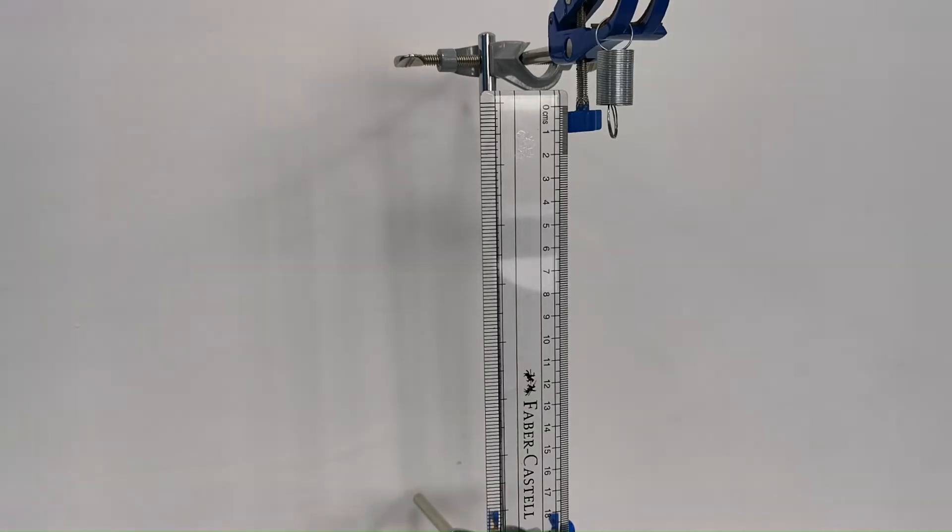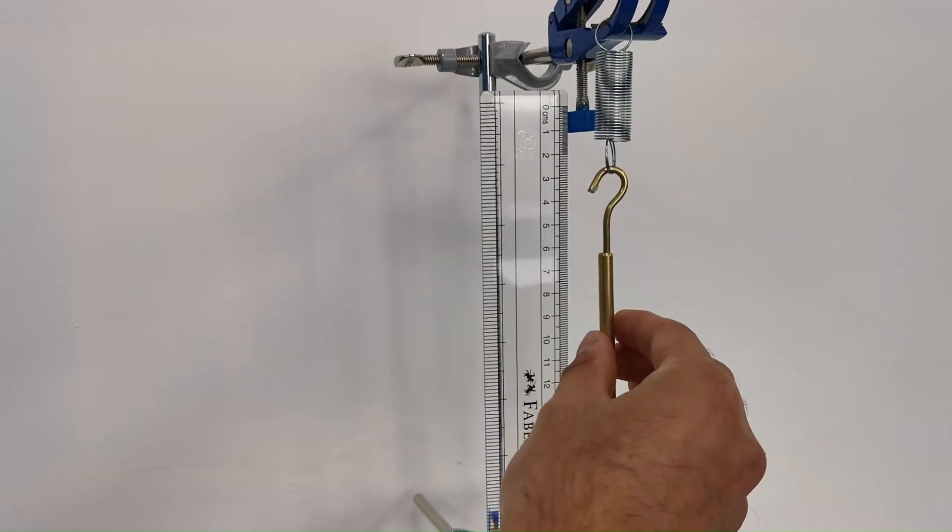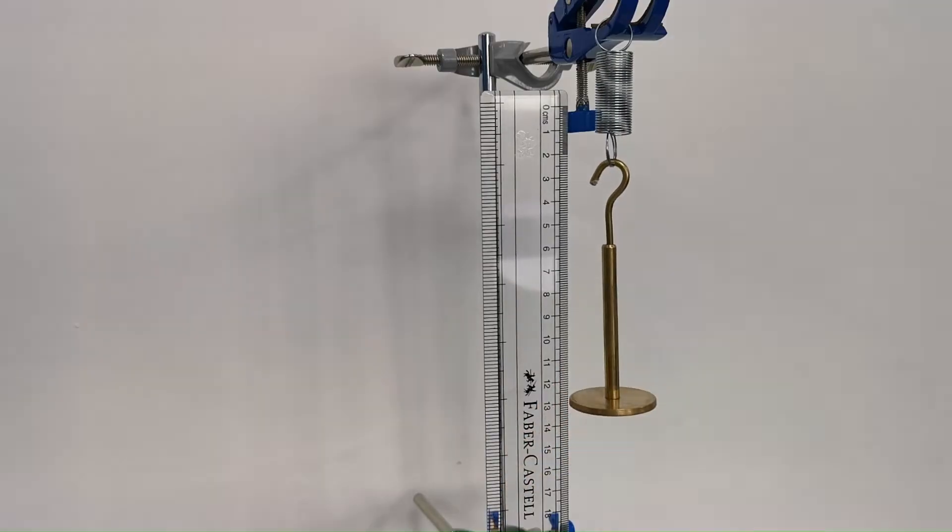To avoid systematic errors, it is important to align the bottom of the spring with the zero centimeter mark on the ruler to measure the extension accurately. This step is crucial to ensure our measurements are correct.